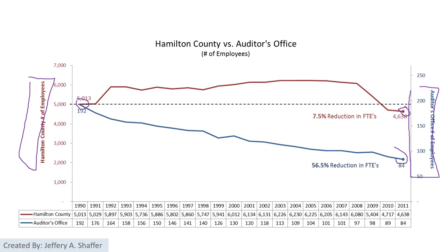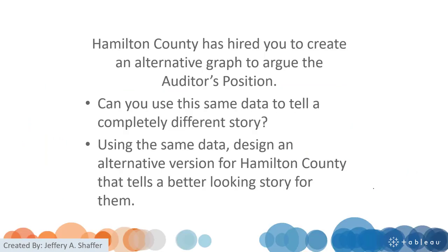We can see that for the blue team, they have a very constant reduced staff from 1990 until 2011. So here is the story: the red team — Hamilton County — has now seen this new chart and they want you to create a chart for them to tell their story. Using the same data, can you design an alternative version for the red team to tell a better story for them against the blue team?